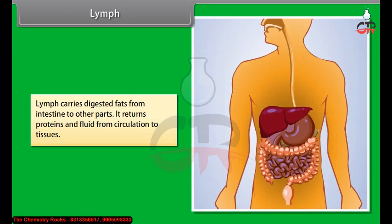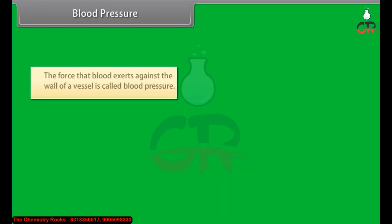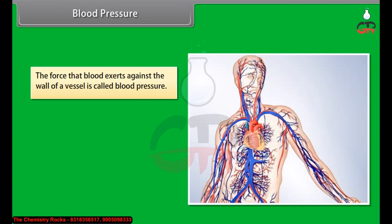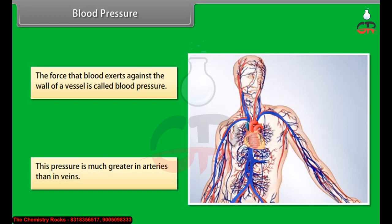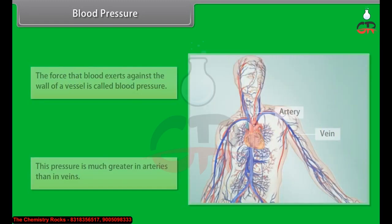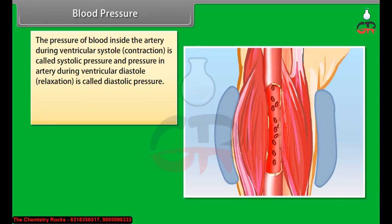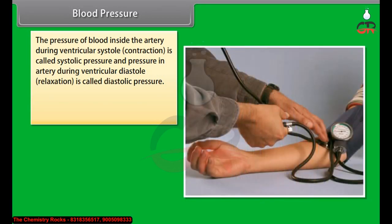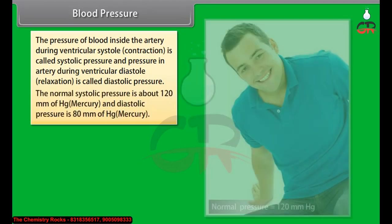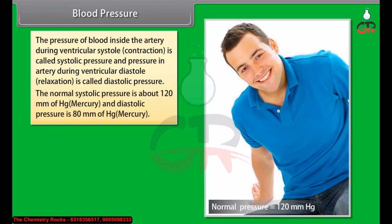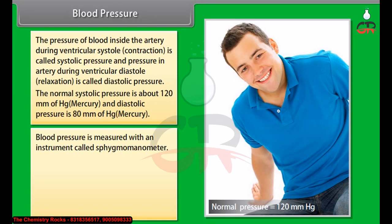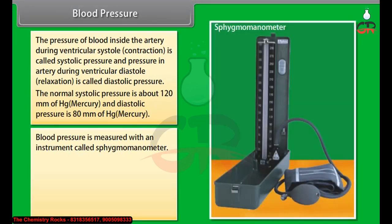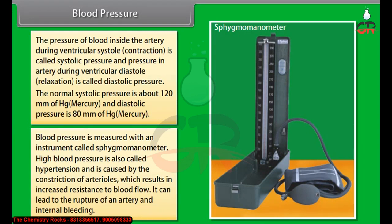The force that blood exerts against the wall of a vessel is called blood pressure. This pressure is much greater in arteries than in veins. The pressure of blood inside the artery during ventricular systole (contraction) is called systolic pressure, and the pressure during ventricular diastole (relaxation) is called diastolic pressure. Normal systolic pressure is about 120 mm of mercury and diastolic pressure is about 80 mm of mercury. Blood pressure is measured with an instrument called a sphygmomanometer.